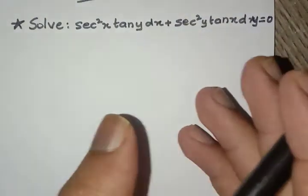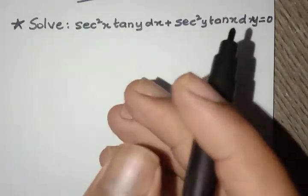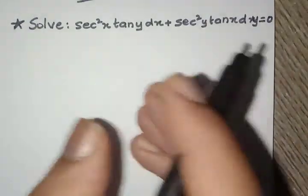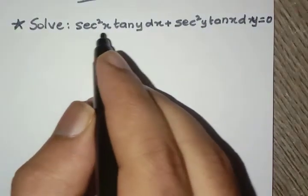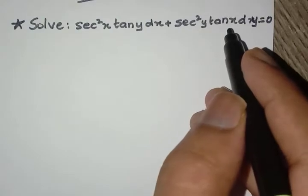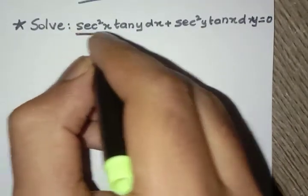In this type of problem, what we need to do is arrange everything related to the variable x to one side and everything related to y on the other side. So we have sec²x tan y dx and sec²y tan x dy. What if we divide both sides by tan x tan y?